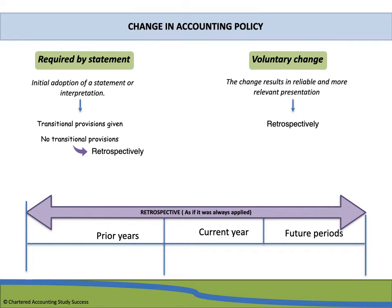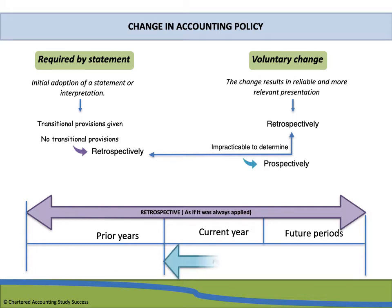But what if a company has lost some of its documentation, or if it is impracticable to determine the retrospective effect? In that case, the change must be accounted for prospectively. Prospectively means the change takes effect from the current year going forward, so it is accounted for only from the current year onwards.